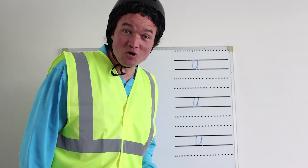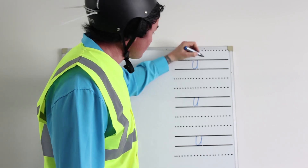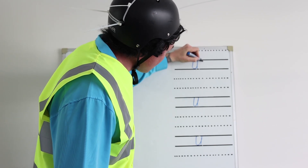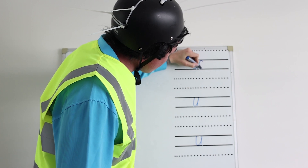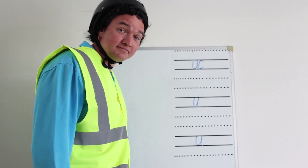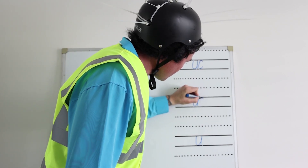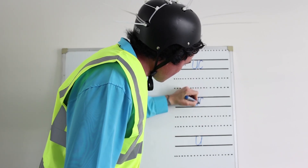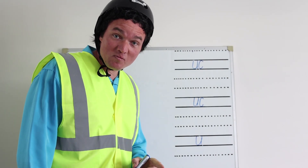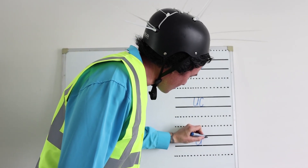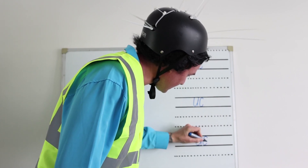Now let's write the letter C. The letter C starts just here. We go around, and stop there. Let's do that again. We curve from here, around, and stop there. One more time. Around here, and there we go.